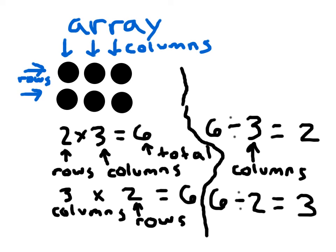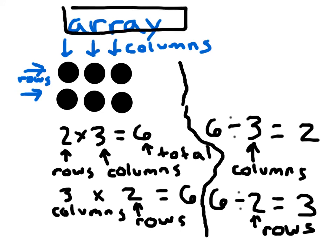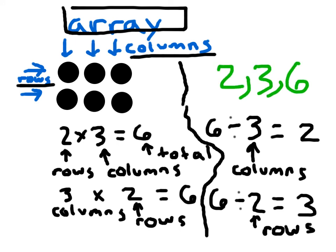That's how we relate multiplication to division together using an array. Going up and down are the columns; going across are the rows. That was one more way to look at this fact family, relating the numbers 2, 3, and 6 together with a multiplication and division fact family.